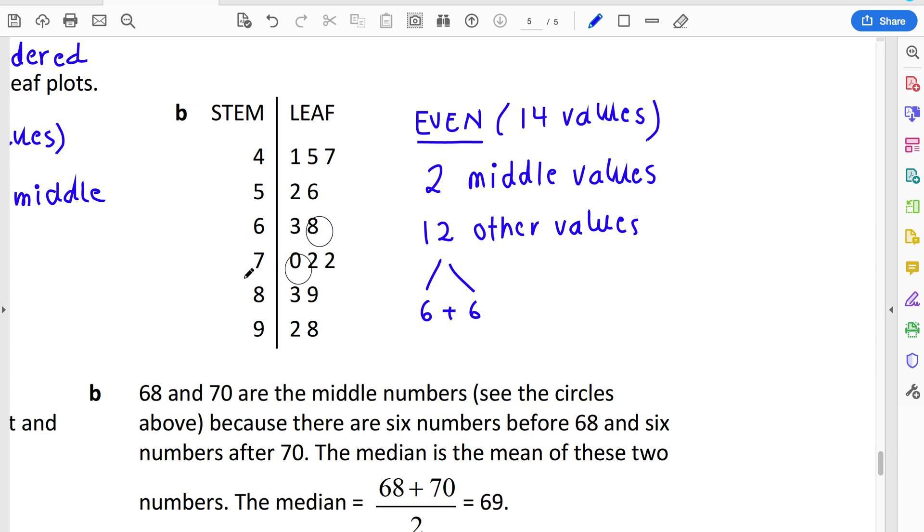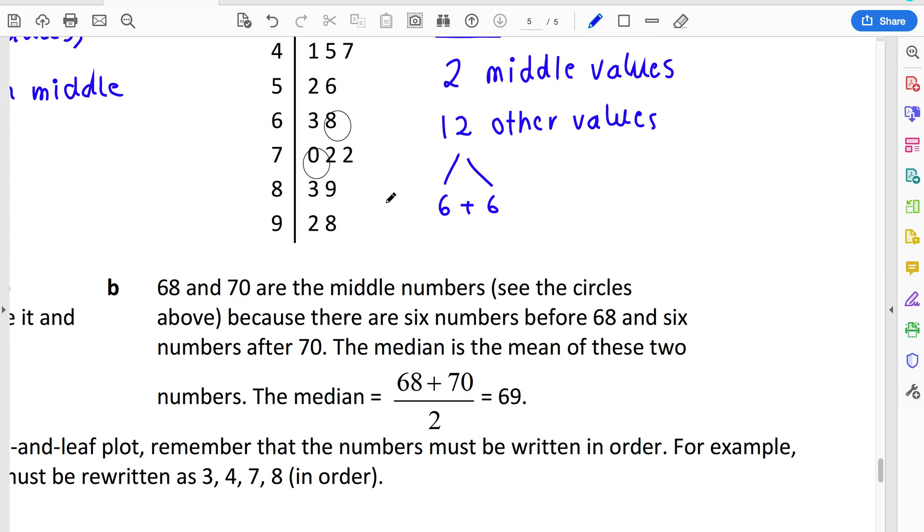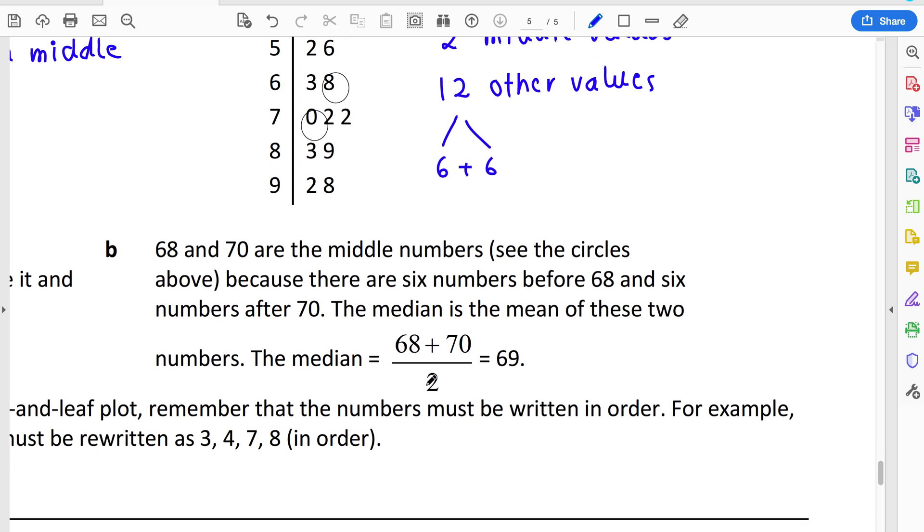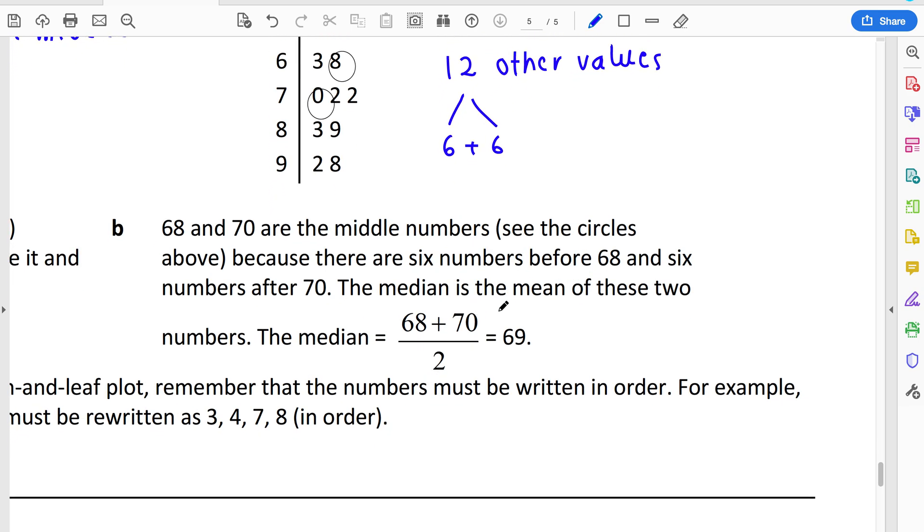So if 68 and 70 are the middle numbers, which we've just found, that means that the median has to be the middle of these two. Now to find the middle of two numbers, you are actually going to find the average of them, the mean of them. And so what you'll see here is to find the middle of 68 and 70, it's a pretty easy one because you can just imagine on a number line between 68 and 70 is just 69. But sometimes you won't have easy numbers like that. So what you can do is add them together and divide by two. And then we can see that our median for this one is 69.